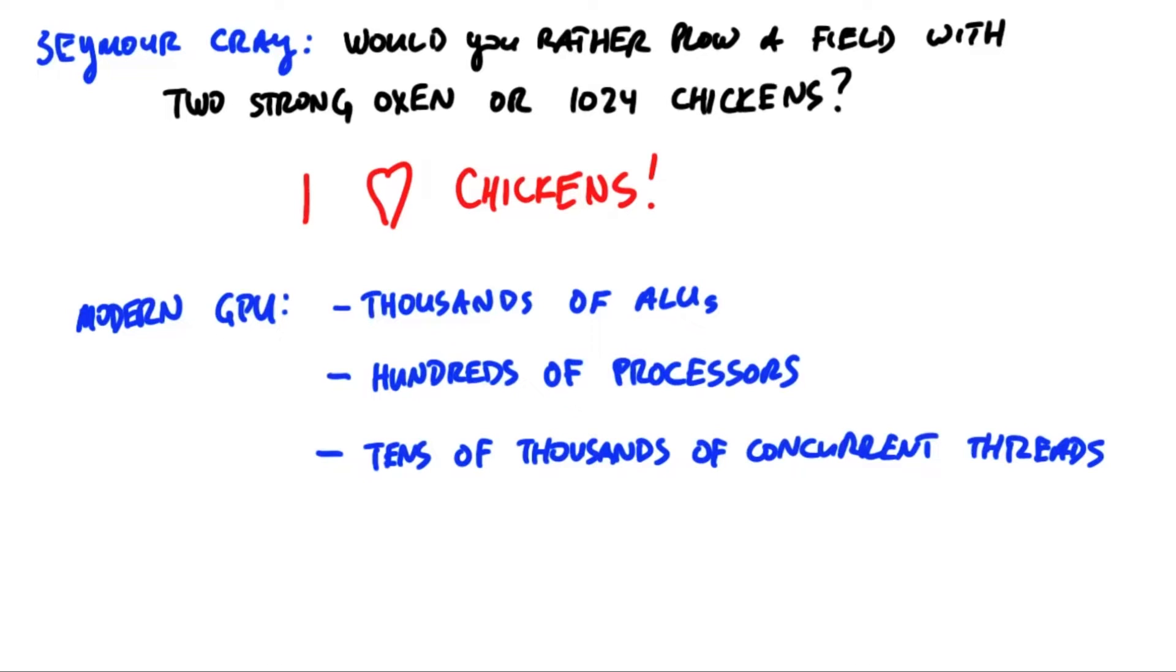A high-end GPU contains over 3,000 arithmetic units, ALUs, that can simultaneously run 3,000 arithmetic operations.